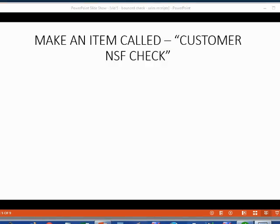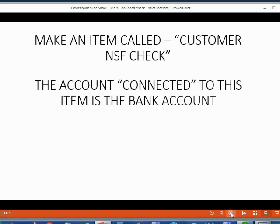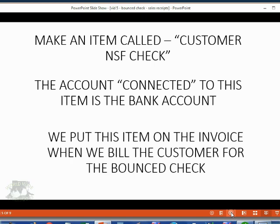Because that item is already there, all we have to do is make an item called "Customer NSF Check." We have to connect this item to the bank account so that when we put it on an invoice, the invoice will decrease the bank account by the amount of the bounce check.